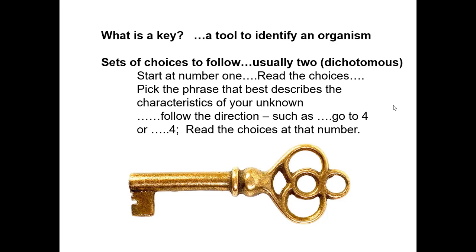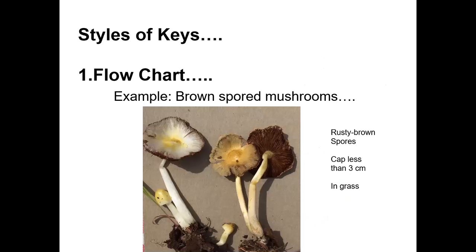We are now going to look at the unknown organism that goes with the brown spore page that you printed out. If you've got a flow chart in front of you for brown spore mushrooms, this is how it's going to work. I've shown you a picture and given you some descriptions on the side of that picture. You're going to start at the top of the brown spore page.